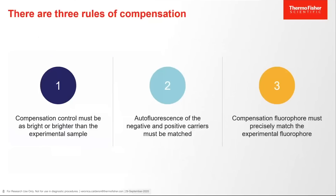There are three rules of compensation. First, compensation control must be as bright or brighter than the experimental sample. Second, the autofluorescence of the negative and positive carriers must be matched. And third, the compensation fluorophore must precisely match the experimental fluorophore. We will go into a little more detail for each.